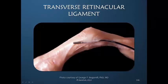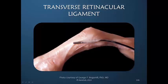Here is a wonderful image courtesy of Dr. Bogomil of the transverse retinacular ligament, with a probe inserted underneath it. You can see the metacarpal phalangeal joint, PIP joint, and DIP joint. We can see the dorsal apparatus and the lateral band, and there are fibers going over and around the PIP joint, clearly retaining that lateral band. That is what prevents the lateral band from moving dorsally.